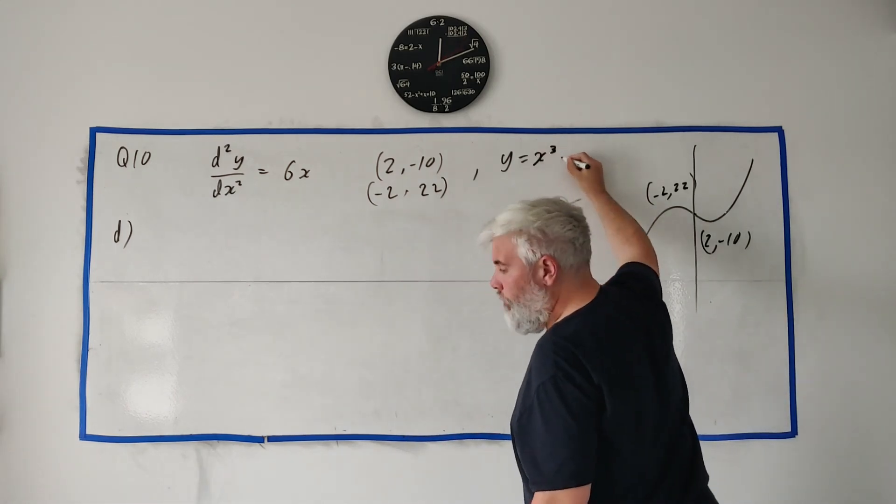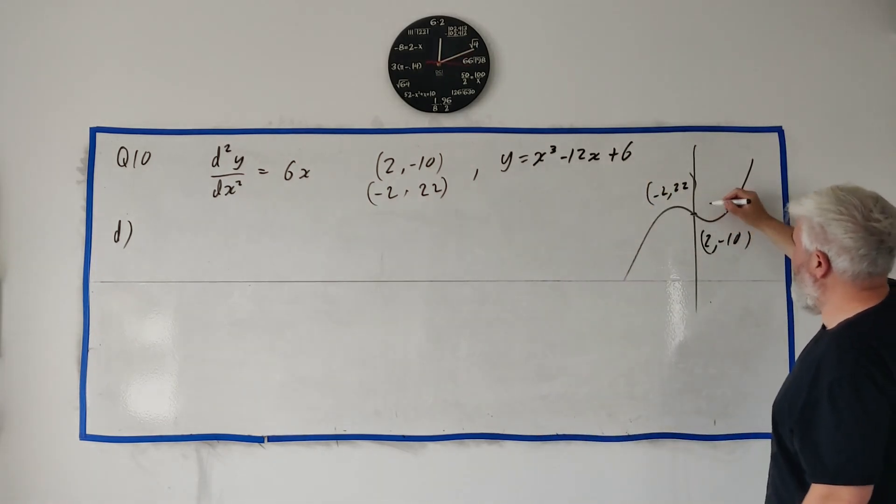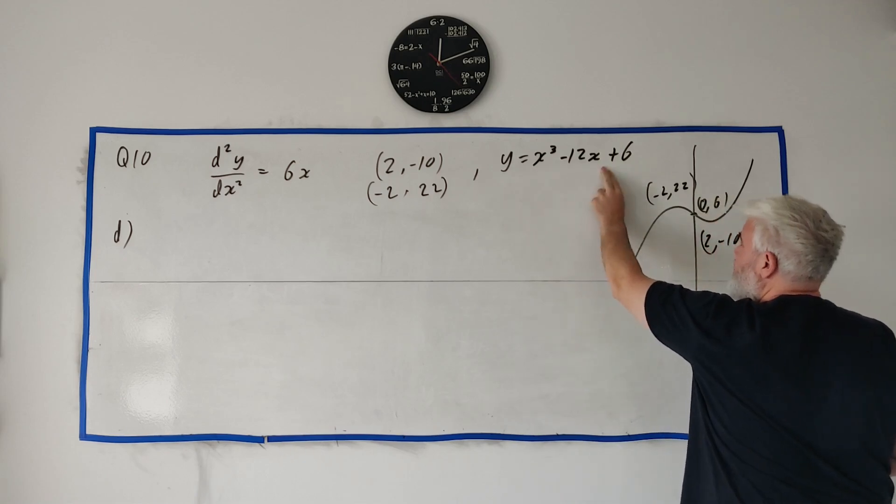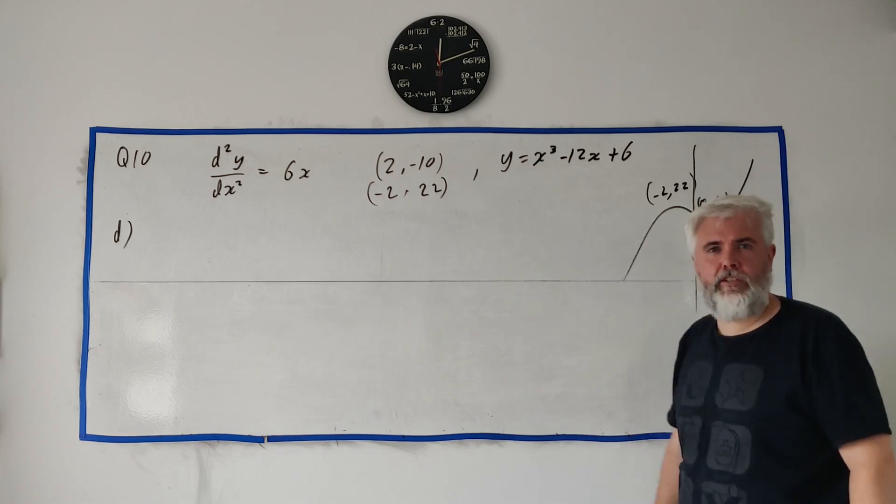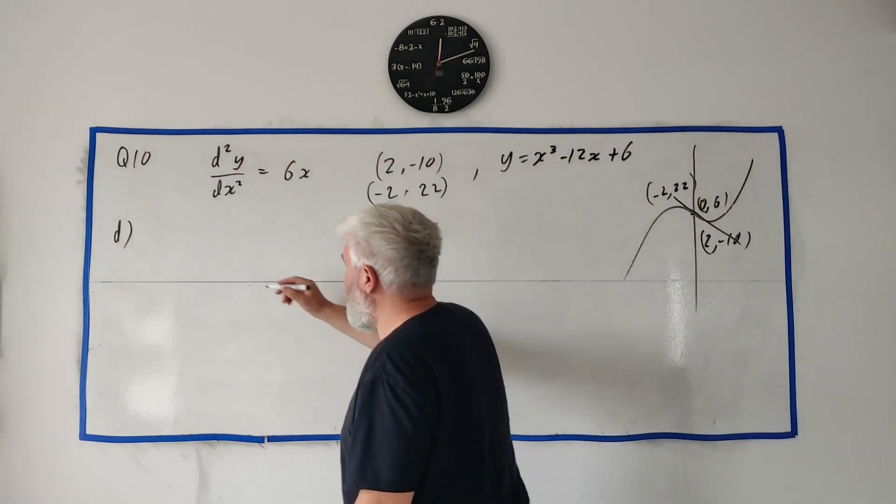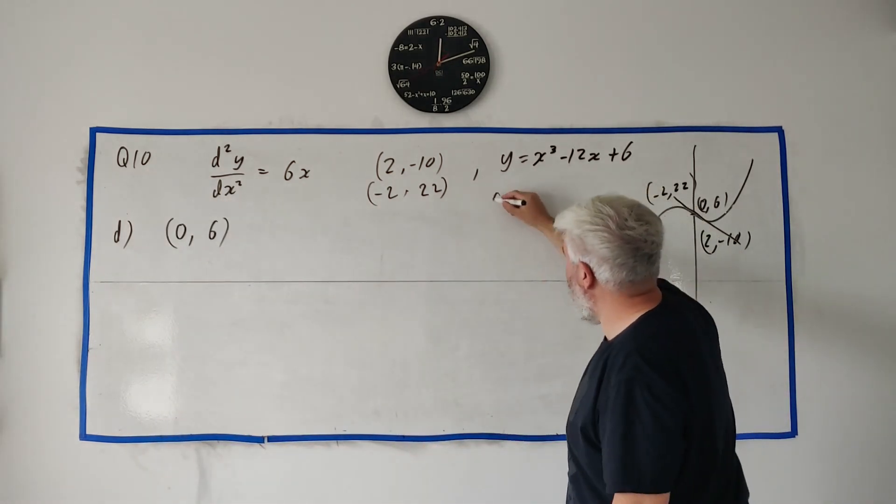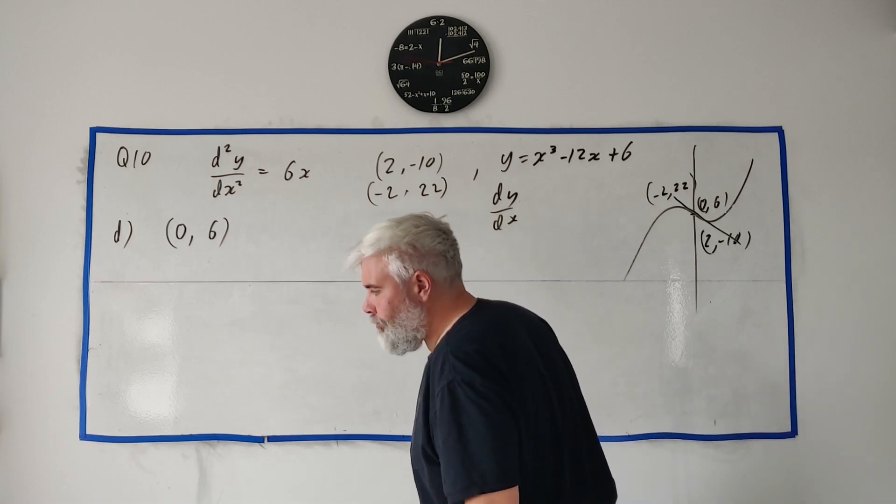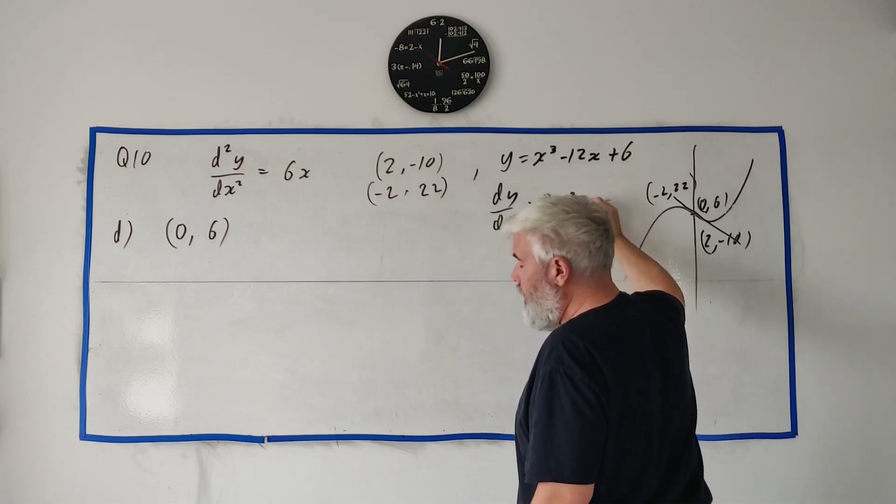I've rubbed out too much information there. We had y is equal to x cubed minus 12x plus 6. So yeah, sorry, we know this point here that is 0, 6. The y-intercept. If we put 0 in everywhere here, we're just left with 6, y equals 6. Okay, so we know the y-intercept part. So what they're looking for is the tangent here. So we actually, we know the point 0, 6. So what we're really looking for is the slope. And again, I've rubbed out too much information. dy/dx is equal to 3, yeah, 3x squared minus 12.